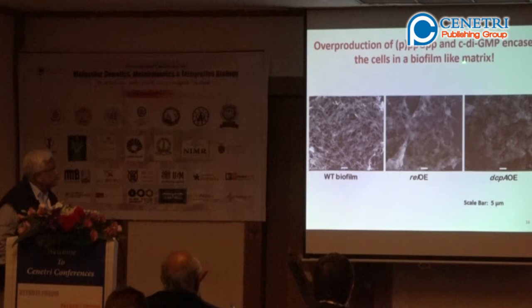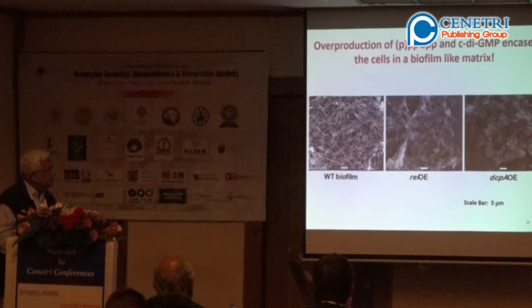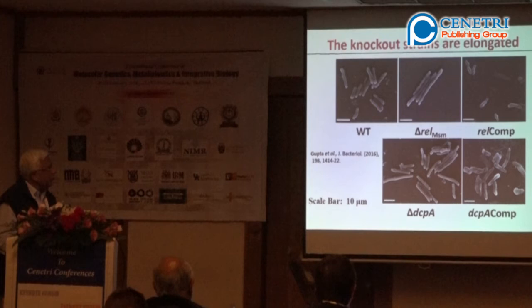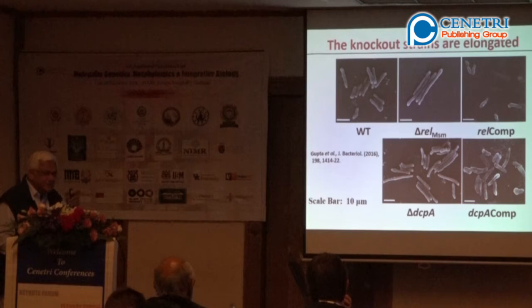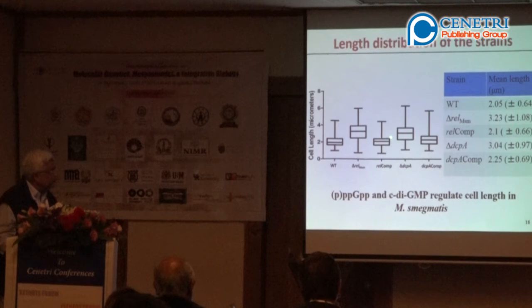Overproduction of cyclic-di-GMP leads to biofilm formation in cells. If we have REL overexpression, biofilm excitation occurs. We have quantitative data with crystal violet — the standard method of quantitation — and putting the gene back shows the same effect. The knockout strains are elongated — a very important observation published last year. Complementation restores the regular shape; elongated cells return to wild-type morphology when the gene is knocked back in. Cell shape changes are a function of the gene, and the length distribution of the strain shows a significant change.